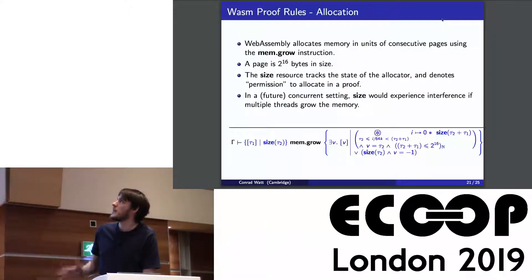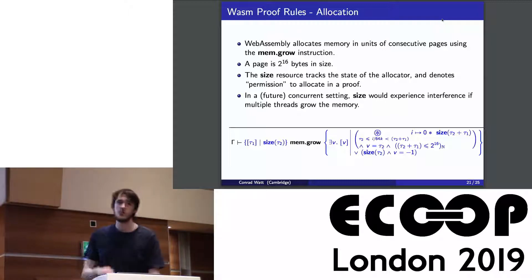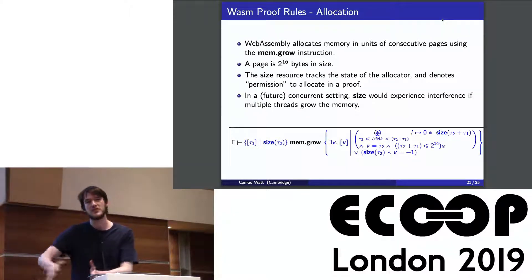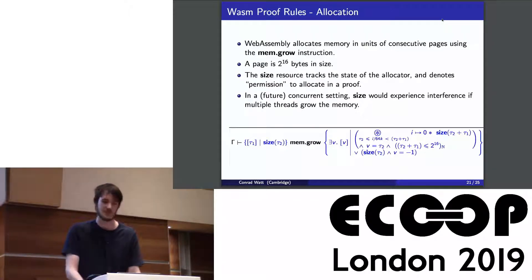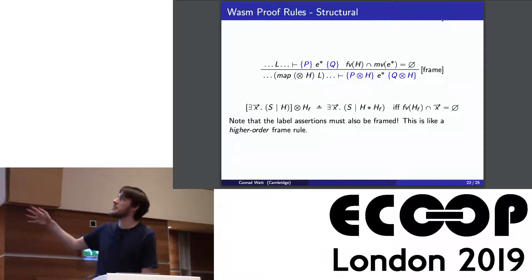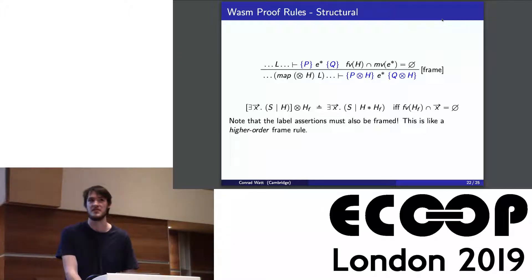We need to talk about WebAssembly's specific allocation because it's a concrete language and we can't say the allocator is non-deterministic. WebAssembly always allocates in terms of pages. At the point of allocation, you need to know where things are going to end up, so you carry a little resource called the size resource that tracks the state of the allocator. Owning this resource gives you permission to do a grow. In a concurrent context in some future extension of the logic, you might experience interference on this resource as multiple threads grow at once. The frame rule looks pretty standard — you distribute it inside the heap part — but you also have to frame on all the label context bits you're keeping track of. This is like a higher-order frame rule, even though our logic only considers a first-order fragment of WebAssembly, similar to how logics handling languages with continuations have a similar rule.